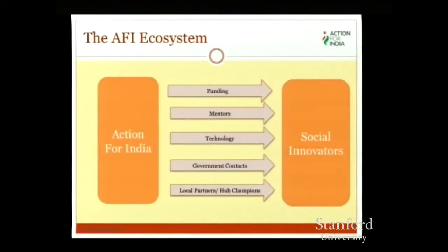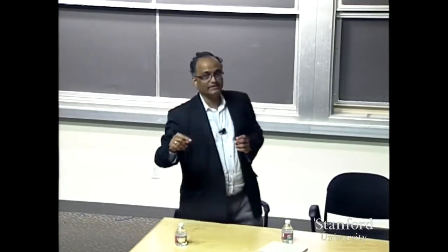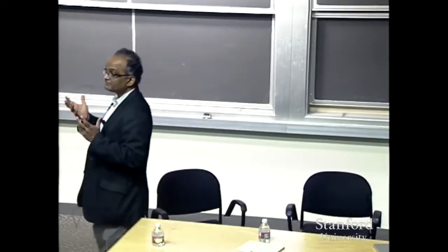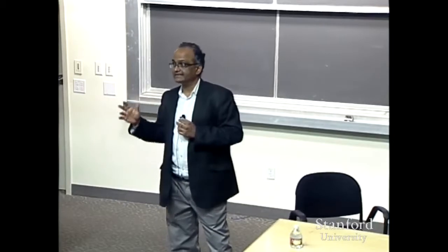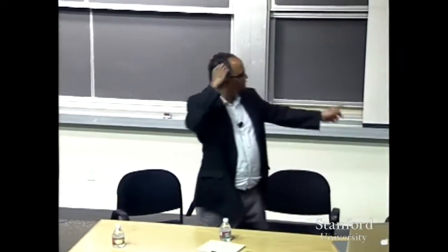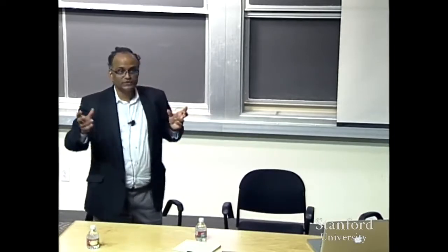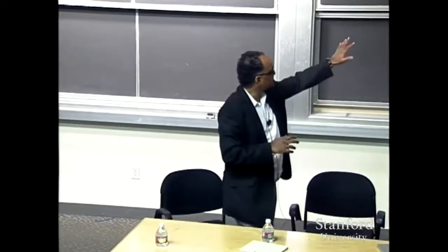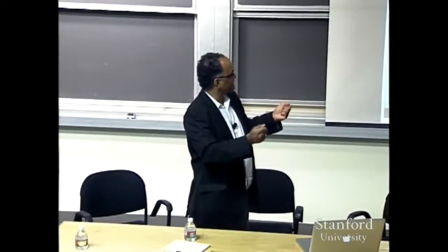When social innovators are looking to scale, their needs are fairly commonsensical: they need funding, mentors, technology resources, and government access. In the social sector in India especially, you cannot ignore the government — it is such a powerful distribution channel that you cannot achieve significant scale unless you partner with it at different levels. Finally, local partners or hub champions provide market expansion opportunities. These are the different ways in which we work with social innovators and help them scale.